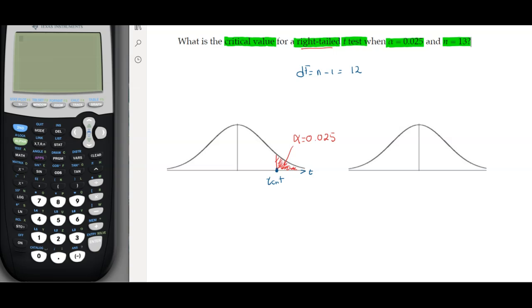We know it's on the right side, so it will be greater than zero, because zero is in the middle. To use the calculator, we need the degree of freedom and the left area to the t-critical, shaded here in green, stopping where the alpha